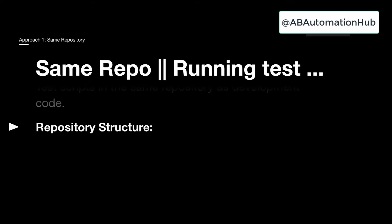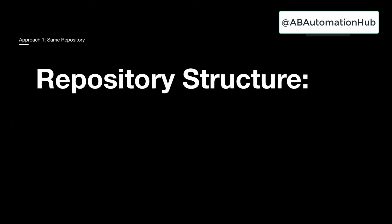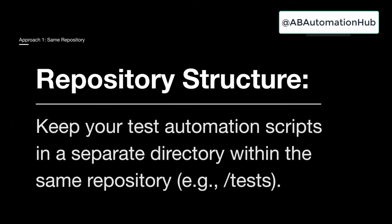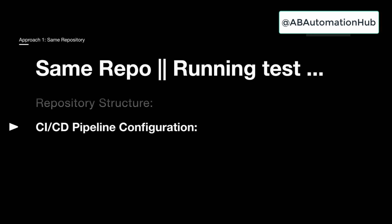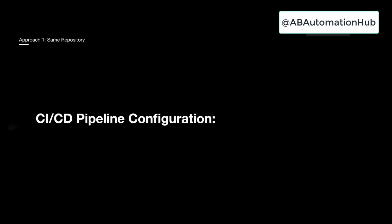In this case also, the test cases are in the same repository as the dev code. The repository structure will again be the same — test scripts inside your test directory. This approach is similar to what we discussed earlier, but we are running our test cases on the environment. So what would be the CI/CD pipeline configuration?